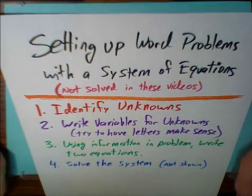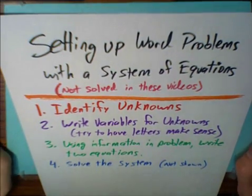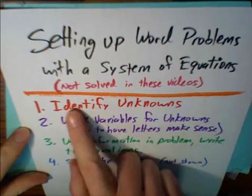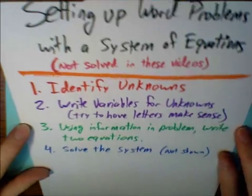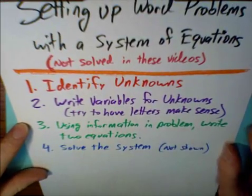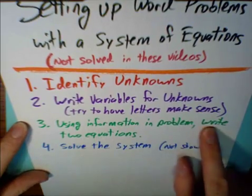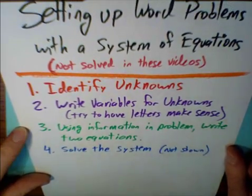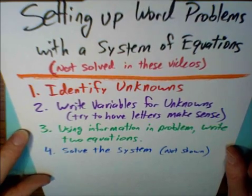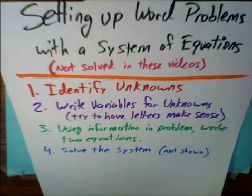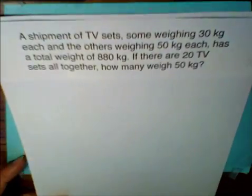In this third example, we're going to set up a word problem with a system of equations. Just to remind you, first we identify our unknowns, then we write variables for the unknowns using letters that make sense, and then using the information we write two equations. We then solve the system of equations, but we're not going to show you that in this video — we're just going to set it up. So let's take a look at an example.